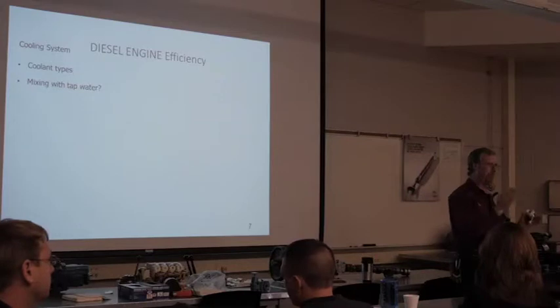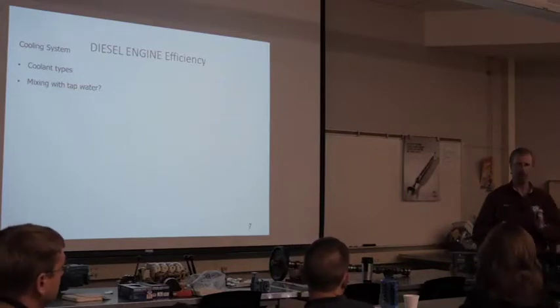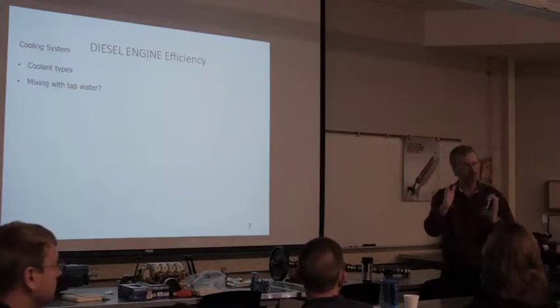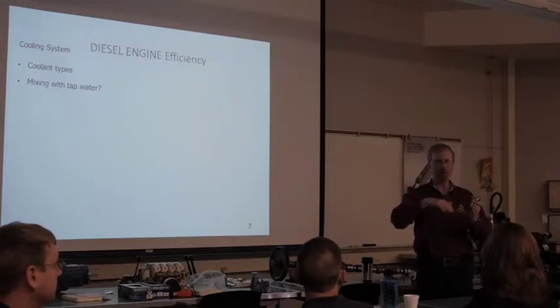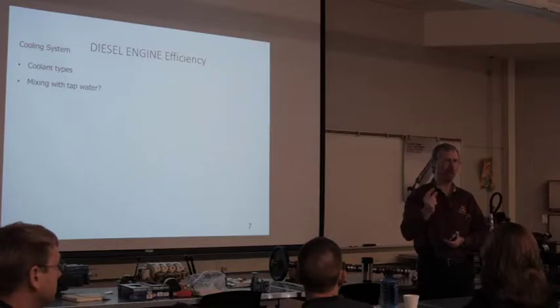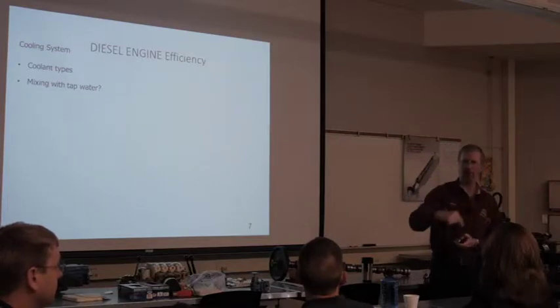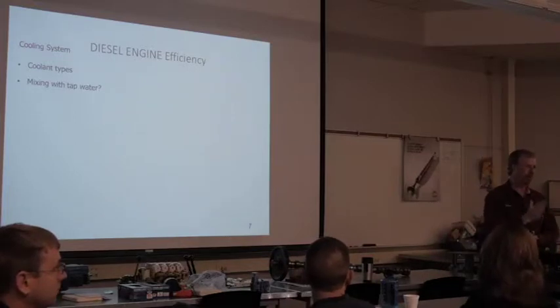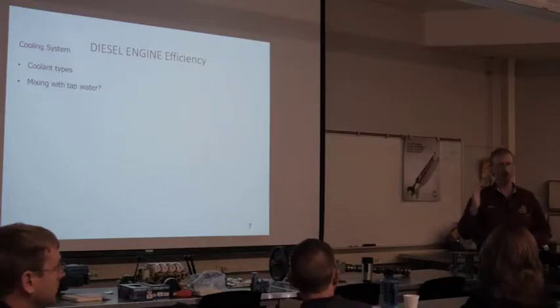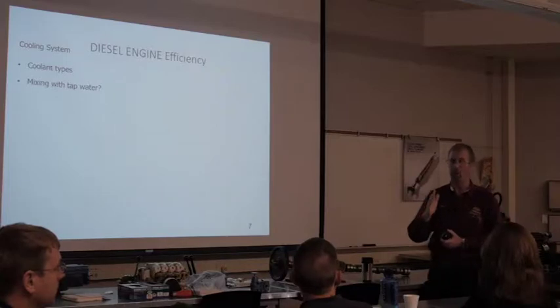So if I go with a 50-50 mix, and a lot of the jugs that I've seen, you have this little chart on the side of them that will raise the boiling point to, you know, whatever degrees, if you go with this mix or this mix, you can only get to a certain point where that starts going the other way, and I believe it's between 65 and 70 percent.